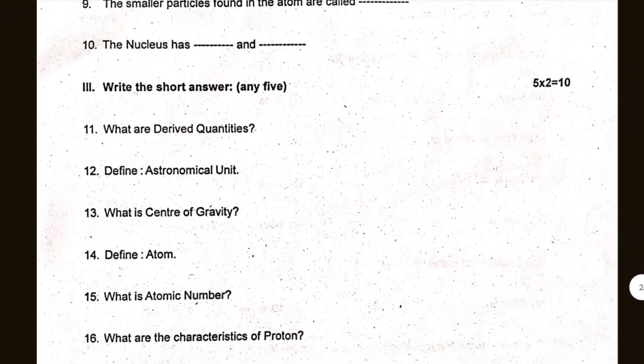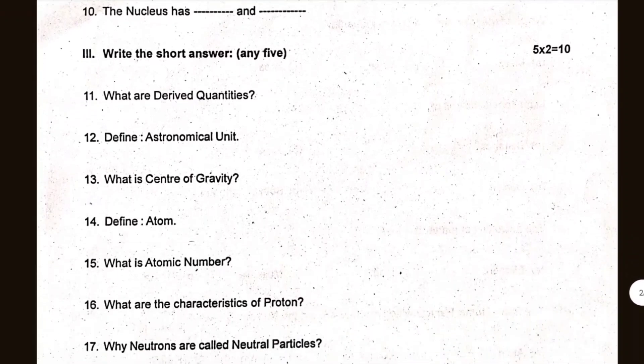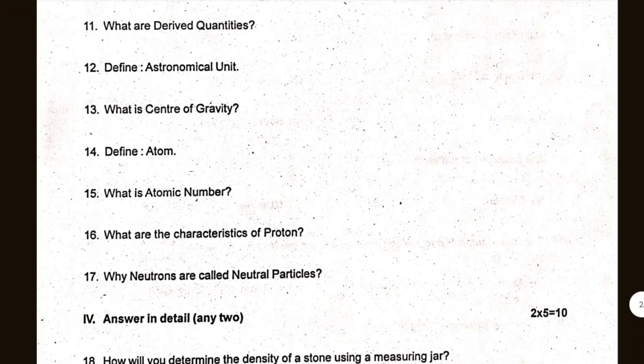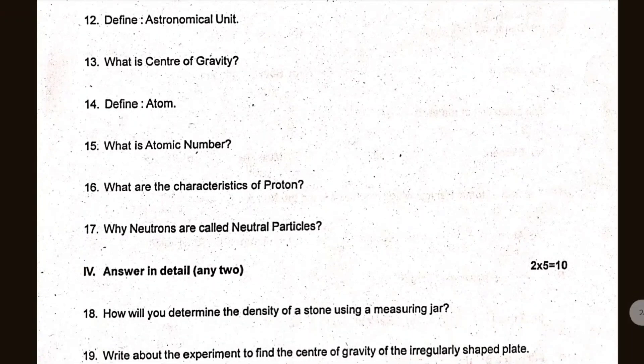Let's see. 2 mark. What are the derivative quantities? Define astronomical unit. What is center of gravity? Define atom. What is atomic number? What are the characteristics of proton? Why neutrons are called neutral particles?